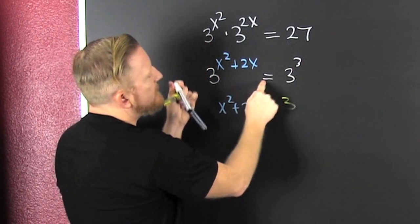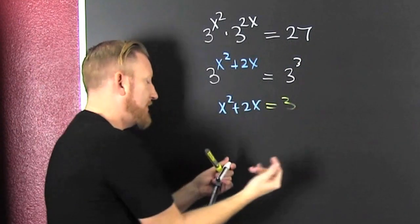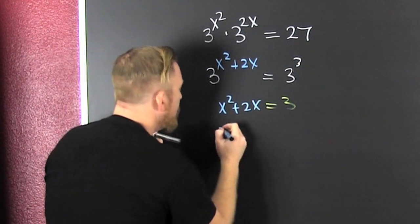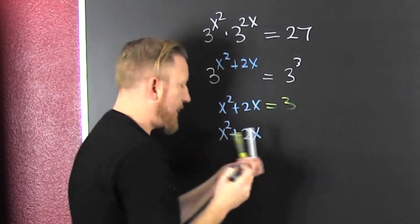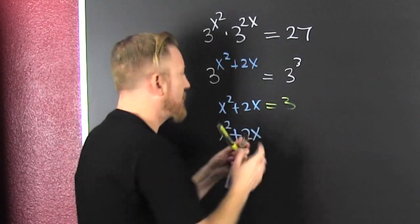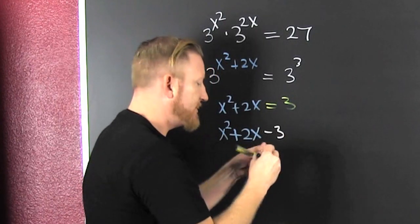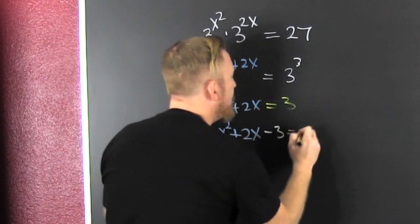Because if they have the same base and they're equal, then their exponents have to be equal. Back that map up. x squared plus 2x minus that 3 just happens to be nothing.